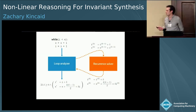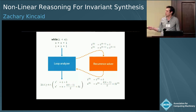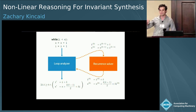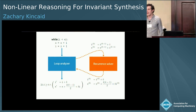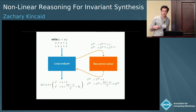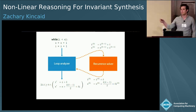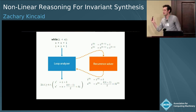The overall approach we're going to take is to treat a loop as if it were a system of recurrences. We throw those recurrences into a computer algebra system, which computes a system of closed forms. Then we take those closed forms and compute a transition formula — a formula over primed and unprimed variables representing the state before and after executing the loop.